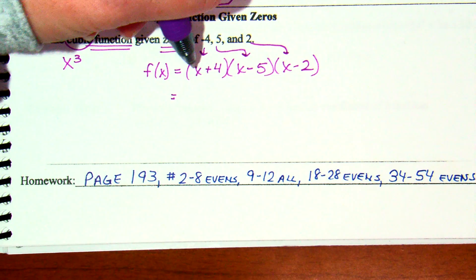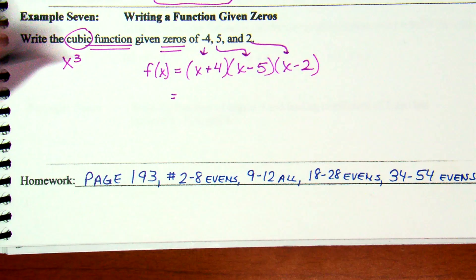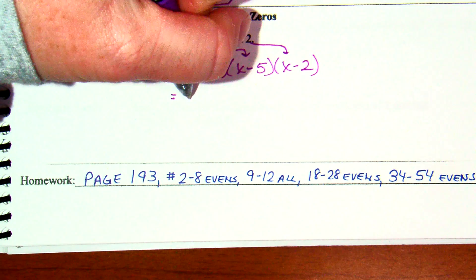So, foil these two? Yeah. And then, multiply that other one in. Distribute it in.